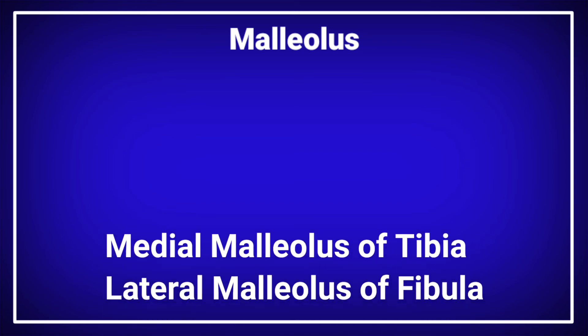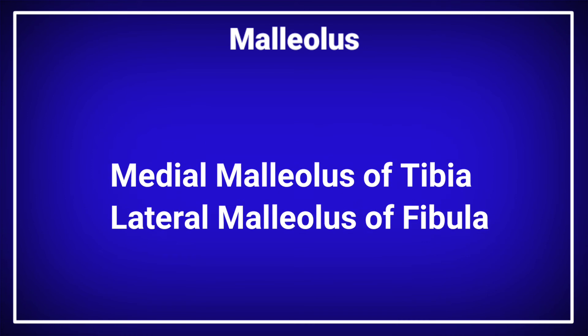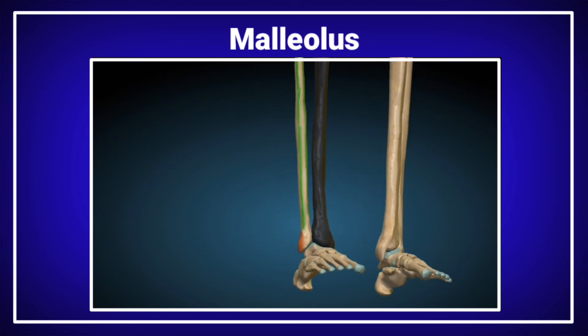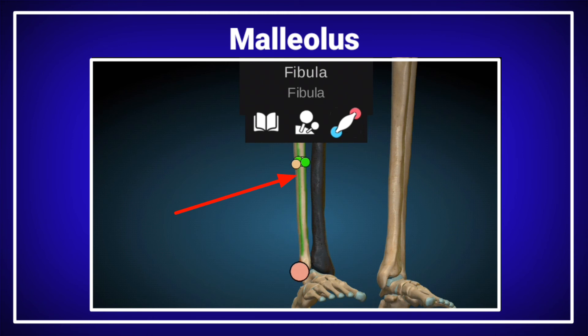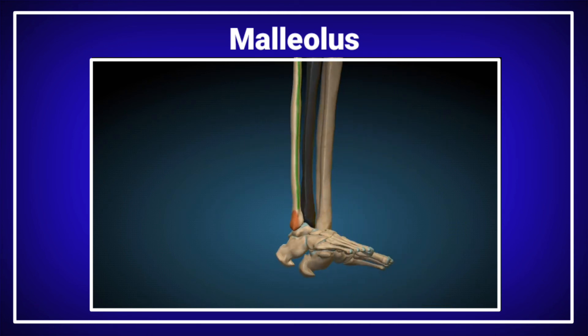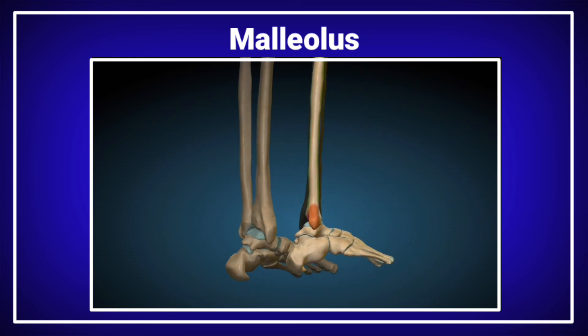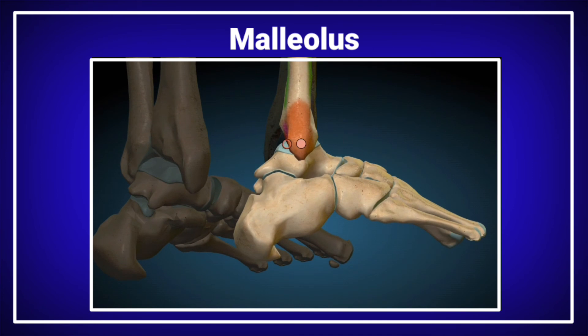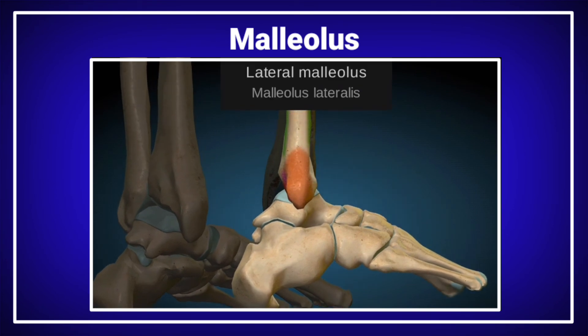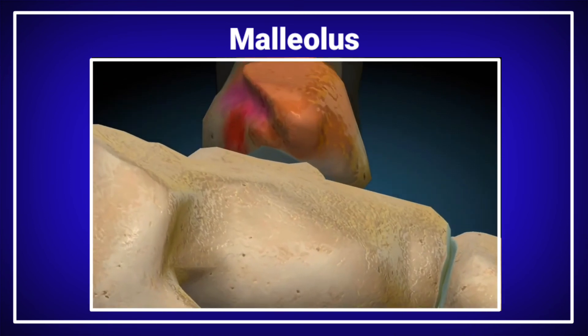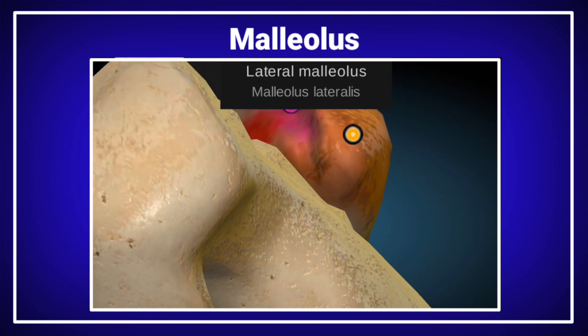The malleolus — the medial malleolus of the tibia and the lateral malleolus of the fibula are important examples. We will discuss the lateral malleolus of the fibula bone. The fibula is located lateral to the tibia bone. The malleolus is located on the lateral side of the fibula, and it is called the lateral malleolus. The malleolus is an example of the rounded elevation.